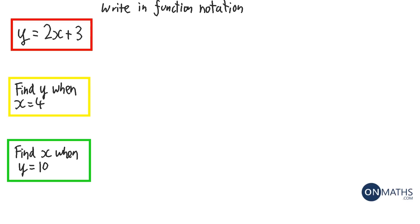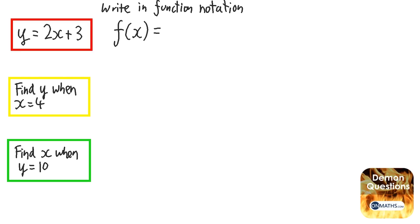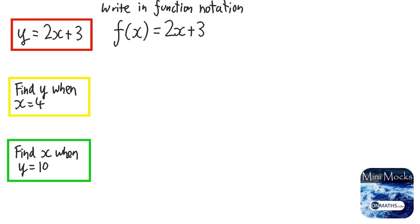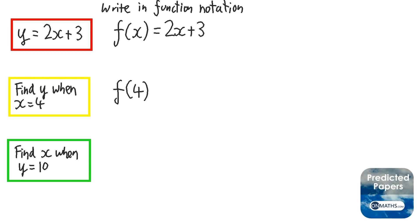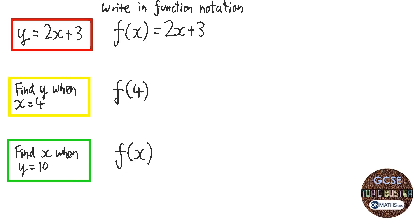Function notation gets rid of y — that's it. So instead of calling it y, we call it the function of x. We don't have to introduce a new letter. So in function notation, the function of x is 2x plus 3. To find y when x equals 4, we replace the x inside the brackets of the function with a 4. And to find x when the function gives us 10, we ask what x makes the function equal 10.